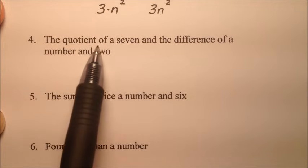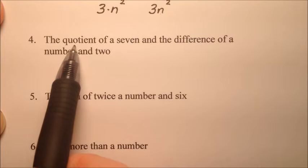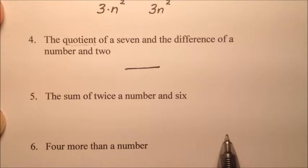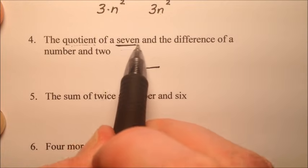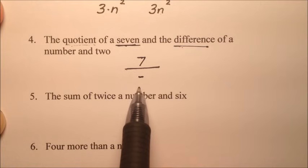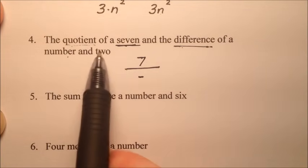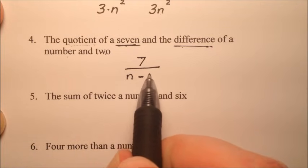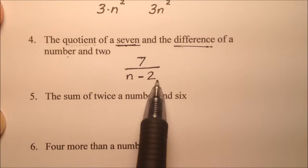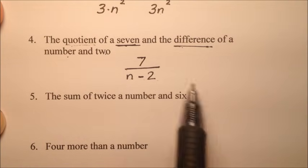Number four says the quotient of seven and the difference of a number and two. Quotient means divide, so I'm going to use a fraction bar. Seven goes on top, and the difference — which is a subtraction problem — goes below. The difference of a number and two gives us n minus two. So it's seven divided by the quantity n minus two.